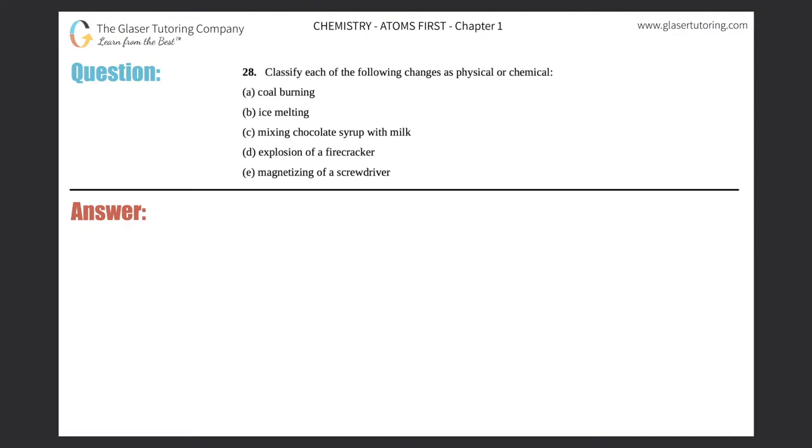Number 28: Classify each of the following changes as physical or chemical. I see we have options a through e, so I'm going to write out a, b, c, d, and I'll put e at the bottom here.